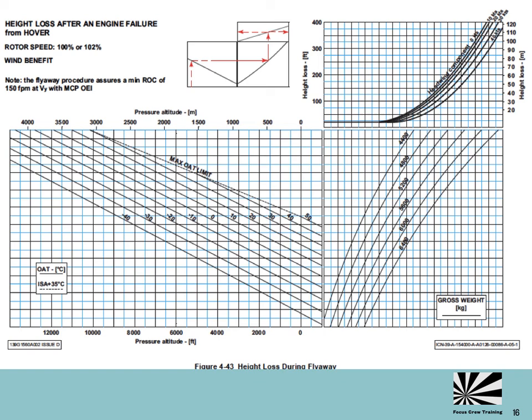This graph taken from the performance section of a rotorcraft flight manual shows calculation of a drop down height for a helicopter operating at sea level pressure altitude, 25 degrees celsius, at a weight of 6,400 kilograms in zero wind. You can see that if the correct flyaway procedure is followed, the expected drop down height is about 60 to 65 feet.